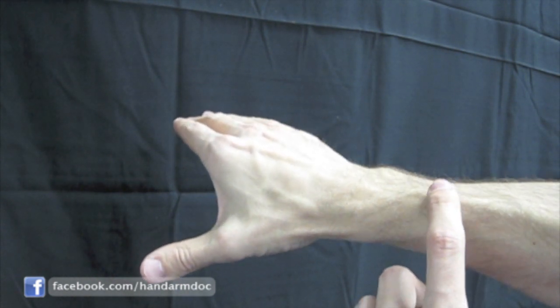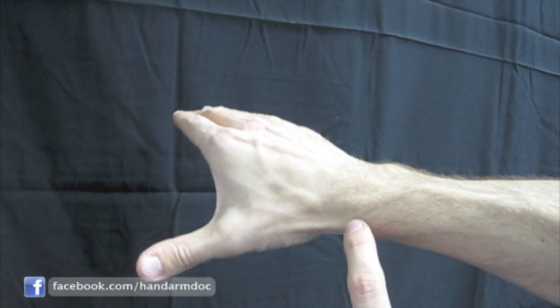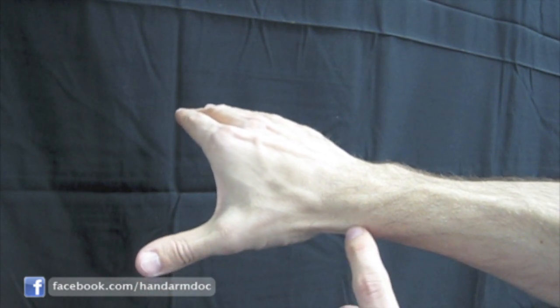This is why patients with mommy thumb or De Quervain's tenosynovitis can have pain from the thumb into the wrist and forearm.